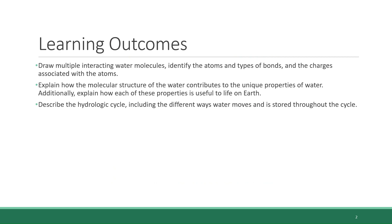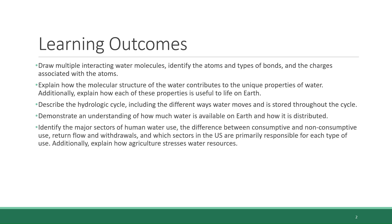You'll be able to describe the hydrologic cycle, including the different ways water moves and is stored throughout the cycle. We'll look at how much water is available on Earth and how it is distributed, the major sectors of human water use, the difference between consumptive and non-consumptive use, the difference between return flow and withdrawals, and which sectors in the U.S. are primarily responsible for each type of use.